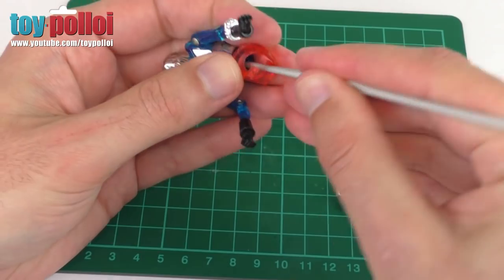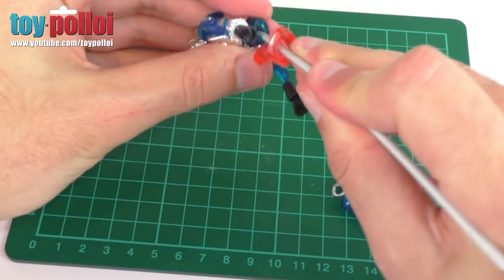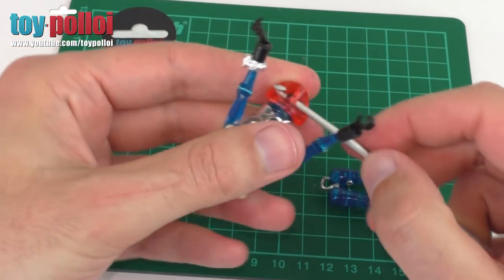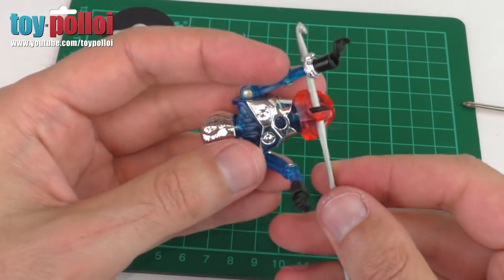And hook it onto, if I can, the o-ring. There you go, I can hook that through. And now we get onto the fiddly bit.